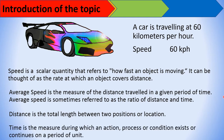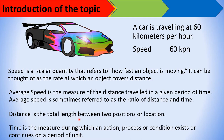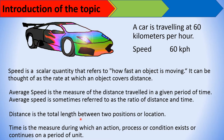Time is the measure during which an action, process, or condition exists or continues — in a period of unit, which could be minutes, hours, or weeks. Distance refers to the total length between two locations. For example, from 7th Avenue to Monumento — those are two locations, and the distance between them is what we mean by distance.